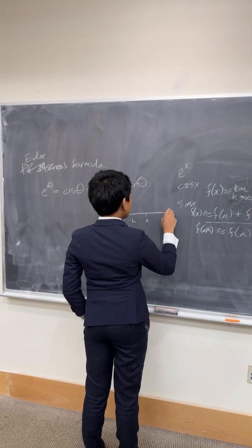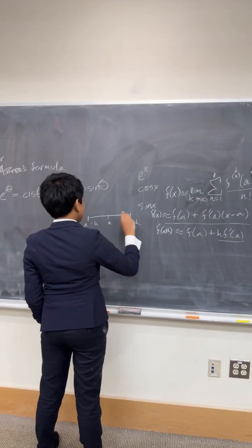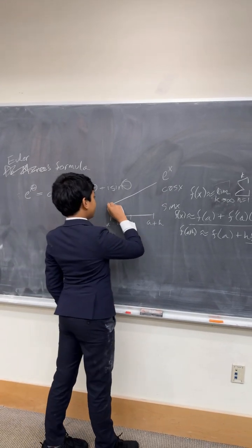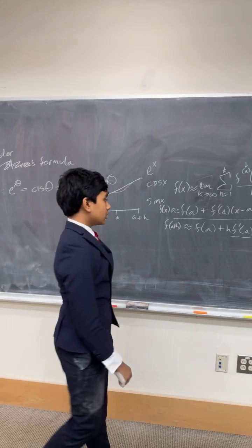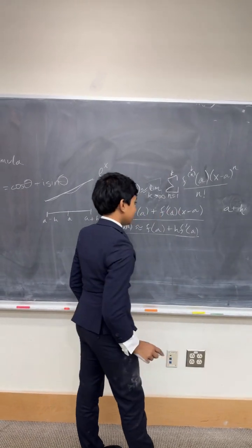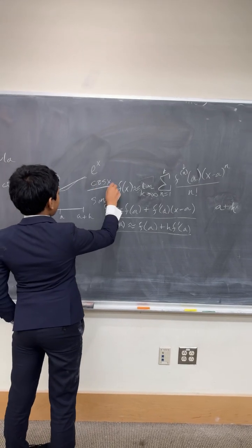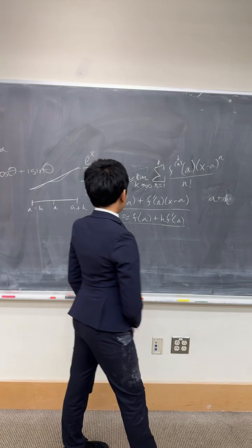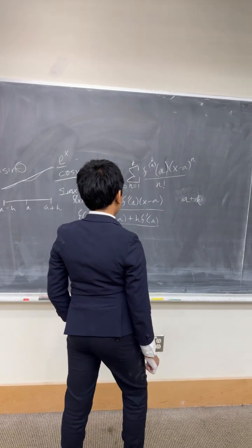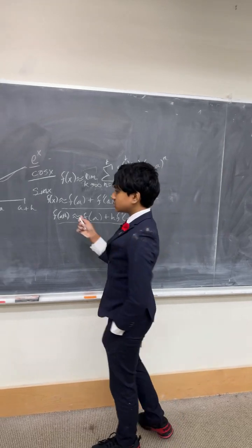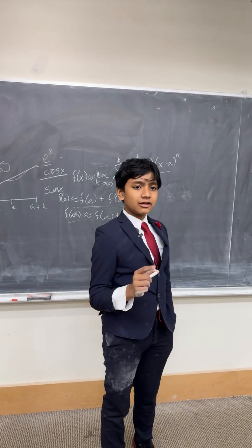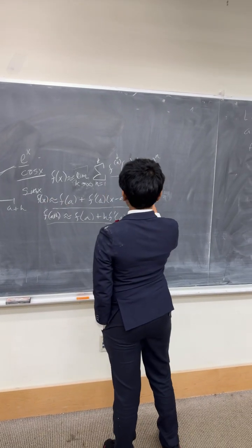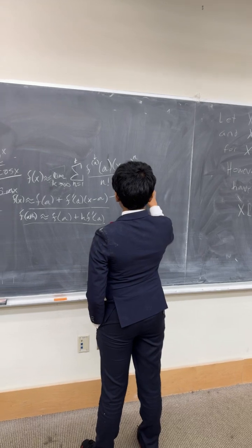Now, the second order is much harder to justify using the same method, so we're going to use something called the integral. We know the first-order result is true, so we can extrapolate: f prime of x is approximately f prime of a plus f double prime of a times x minus a. And now what we're going to do is integrate both sides with respect to x.